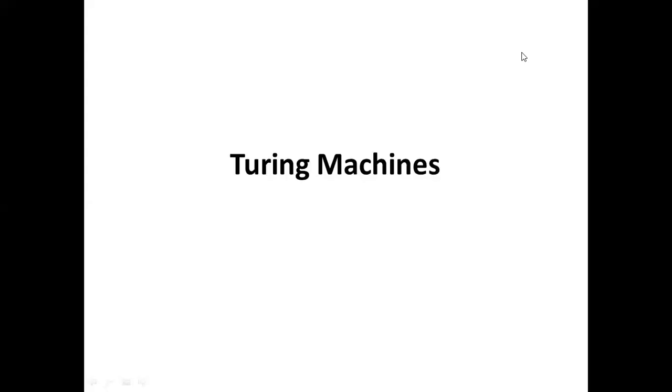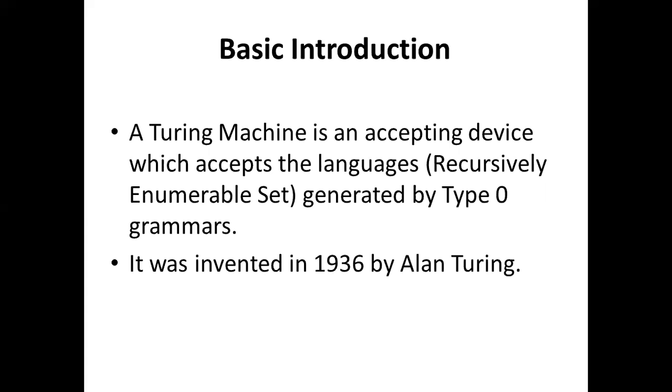Today we will discuss Turing machines. A Turing machine is an accepting device which accepts the languages that are recursively enumerable sets generated by Type 0 grammars. It was invented in 1936 by Alan Turing.